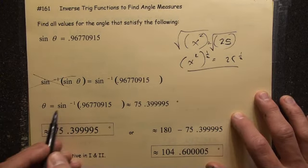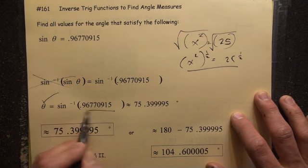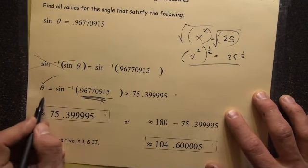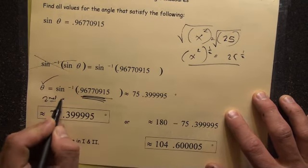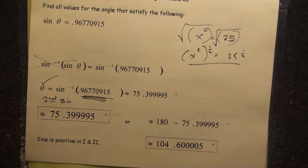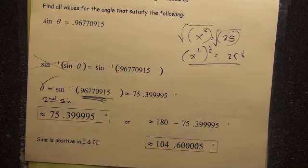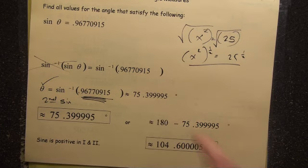Sine is gone, leaving you with theta by itself. Type this in the calculator. In order to do that, you're going to have to press second and then the sine button. You should be in good shape. It should spit this out to you.